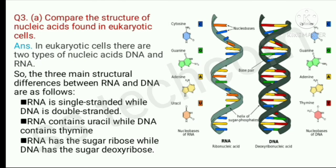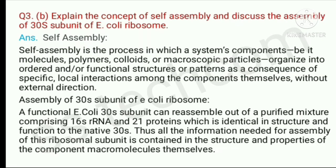Question number 3, A part: Compare the structure of nucleic acids found in eukaryotic cells. Question number 3, B part: Explain the concept of self-assembly and discuss the assembly of the 30S subunit of E. coli ribosome.